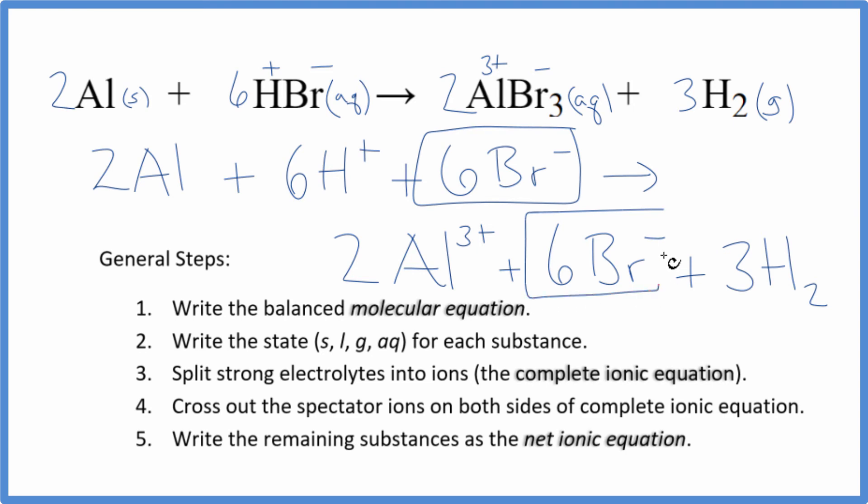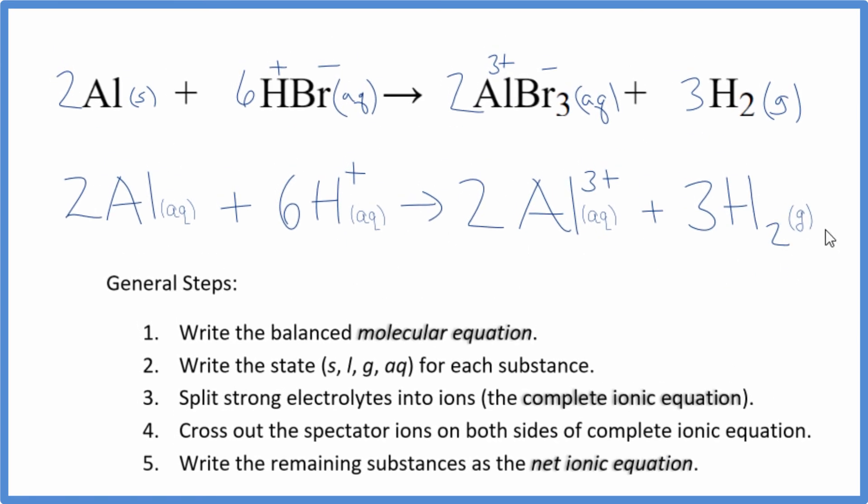But everything else is unique. So everything that's left, that's the net ionic equation for Al plus HBr. I'll clean this up, write the states in, and we'll have our net ionic equation.